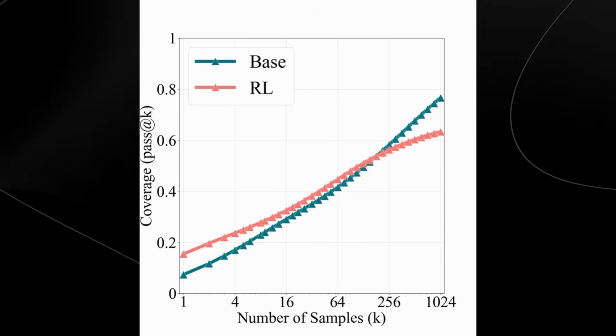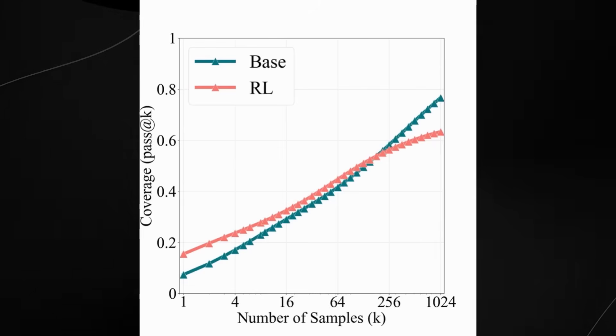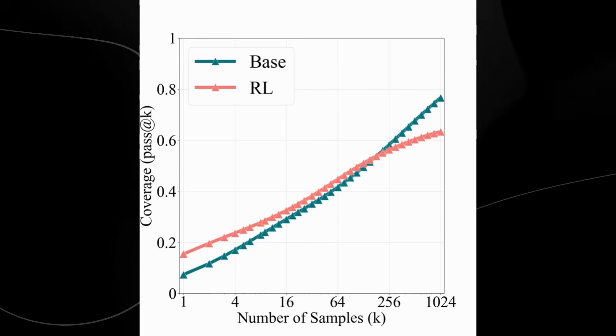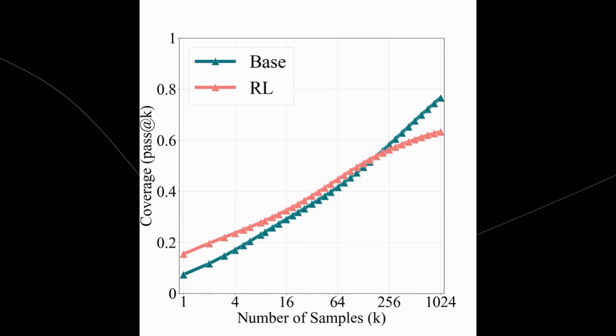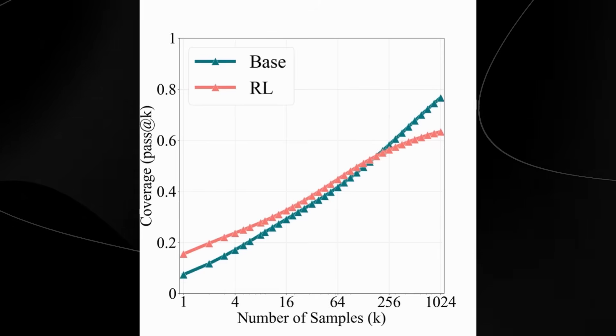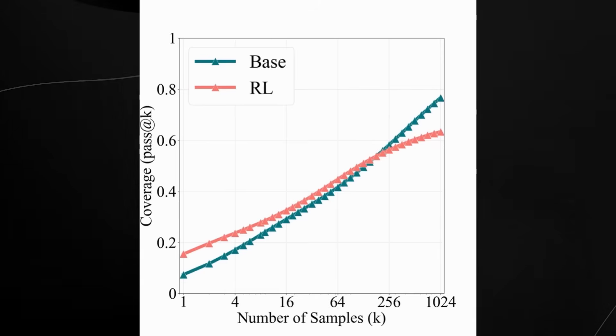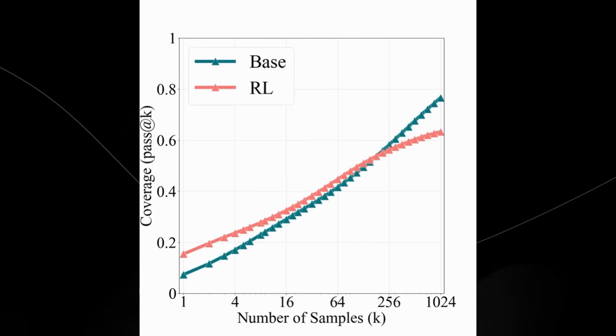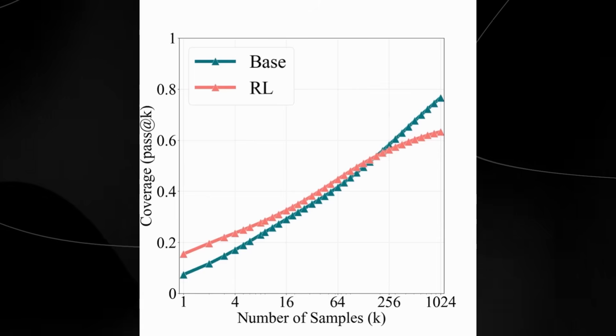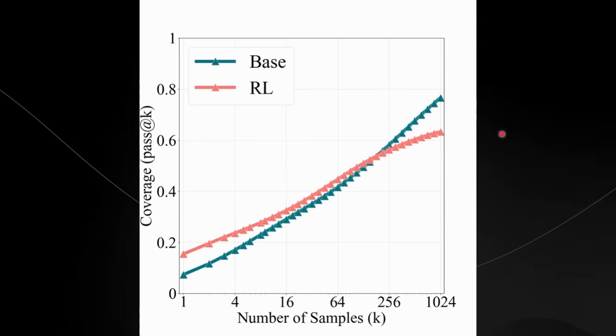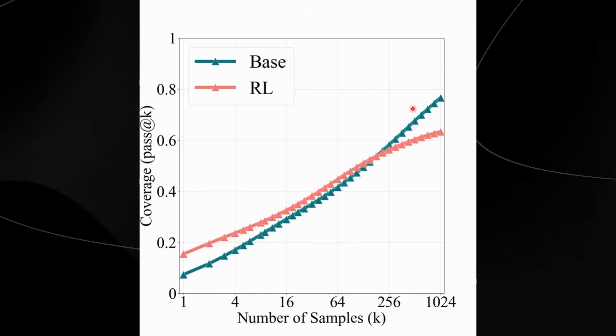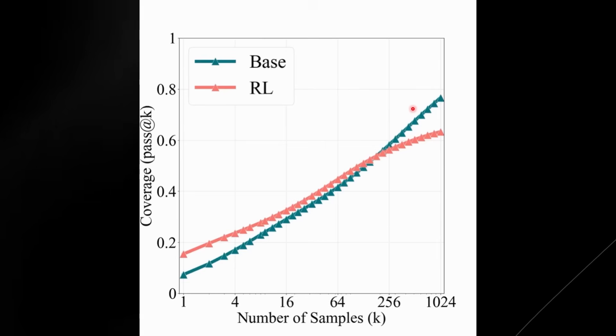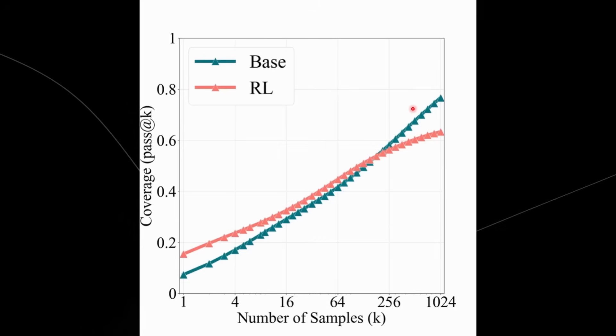They gave both models the same hard questions and then they tested how many correct answers they could get if they let the AI try once, which is where they just try once and that's where k equals one, or if they let it try more times, so k equaling 256, which is basically they gave the AI 256 times to try. Now what they found was rather fascinating. They actually found that the reinforcement learning model was better when it only got one try, but when they let both models try a lot of times, the normal model, which is the base model, that one actually did better in the long term. And this is really surprising because reinforcement learning is one of the major paradigms of these reasoning models.